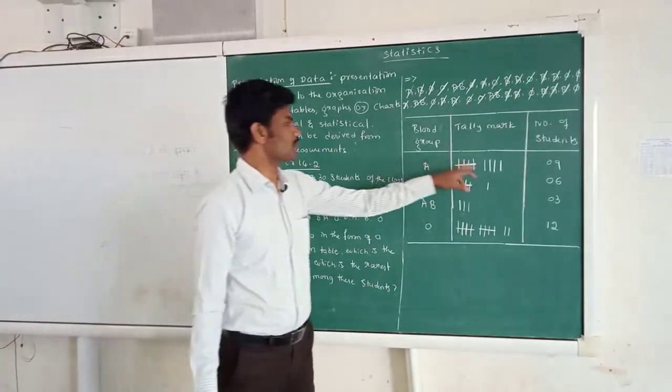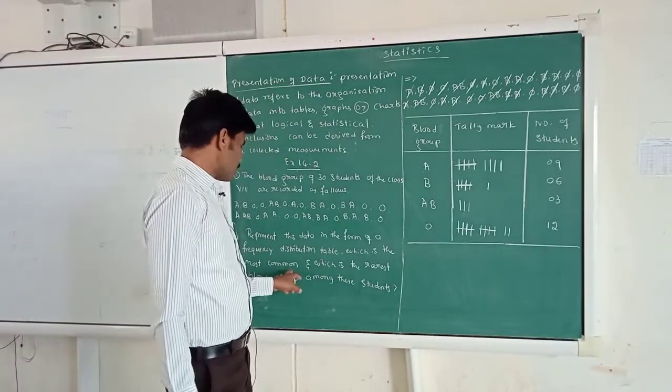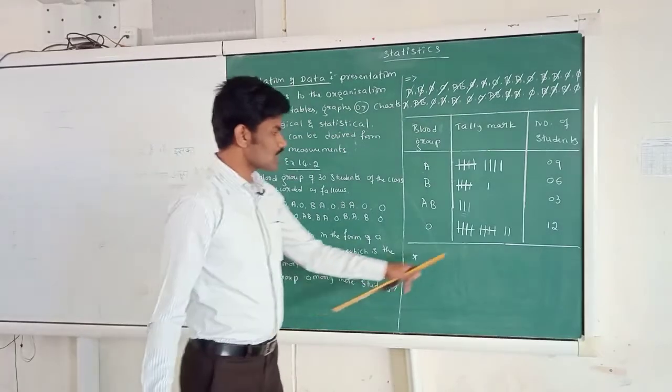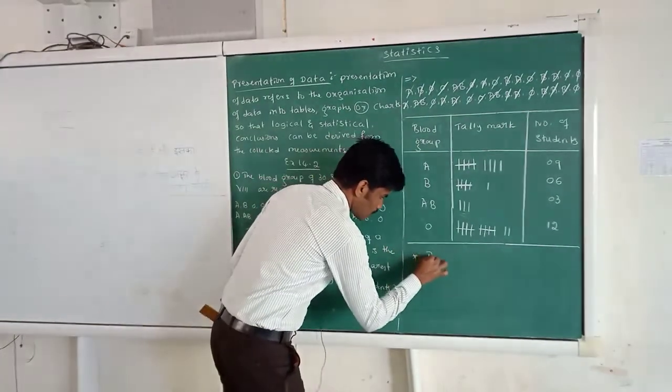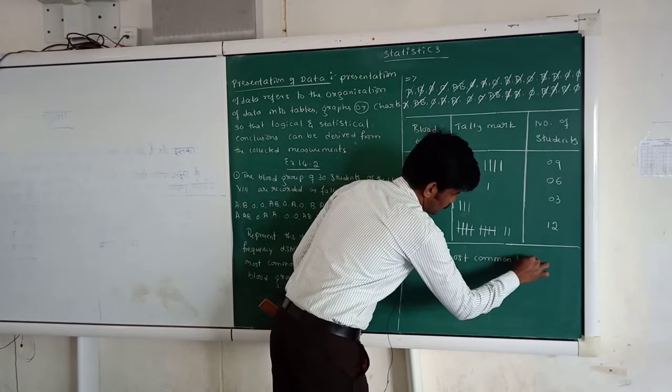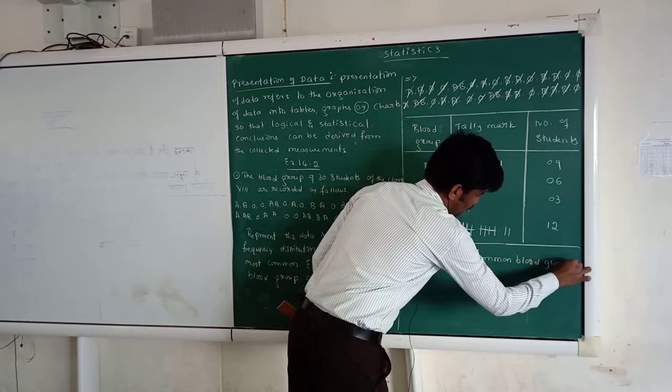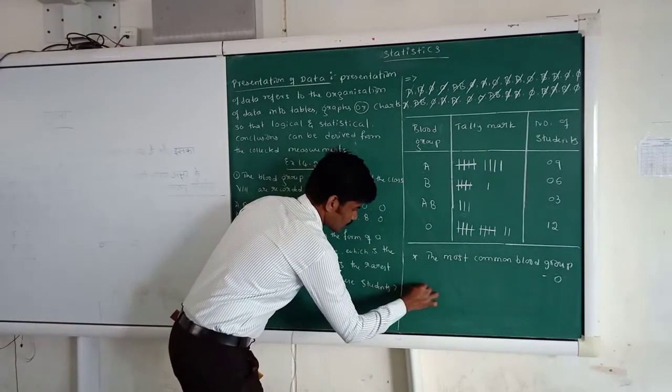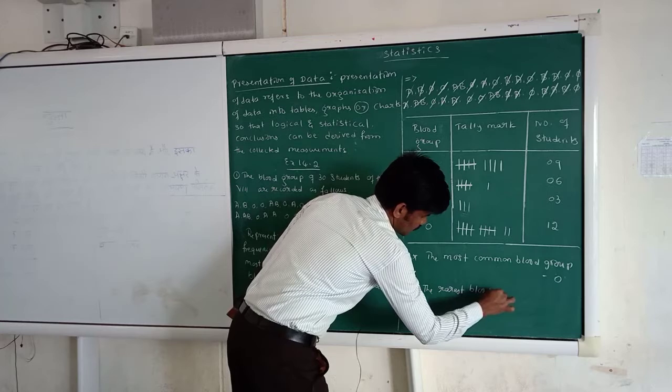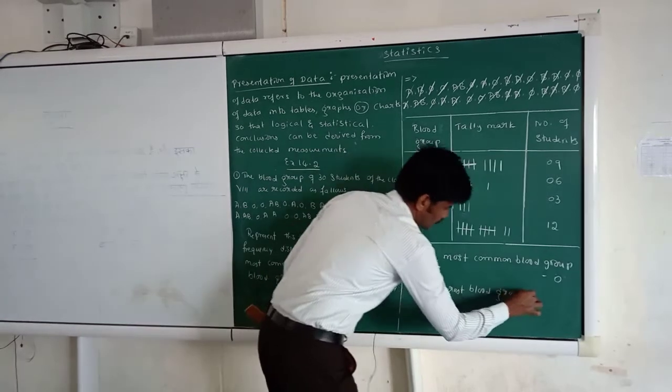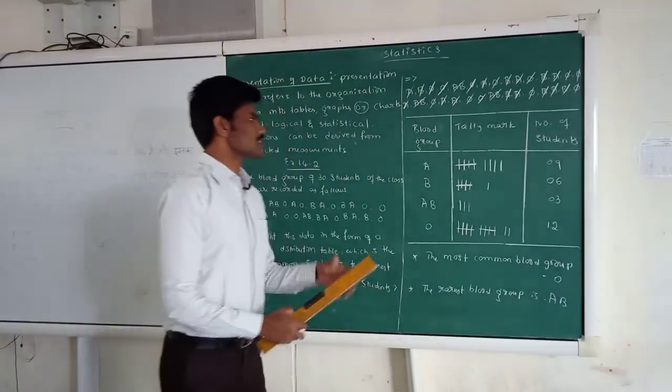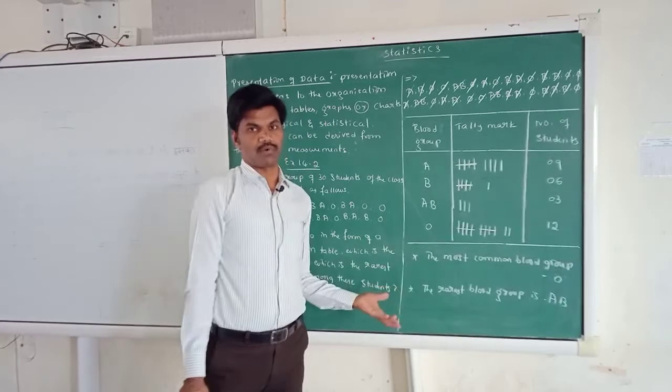Then just you observe this table, which is the most blood group, which is the rarest blood group. By observing the table we come to know the most common blood group is blood group O. The rarest blood group is AB. Okay? This is how we solve this problem. Okay.